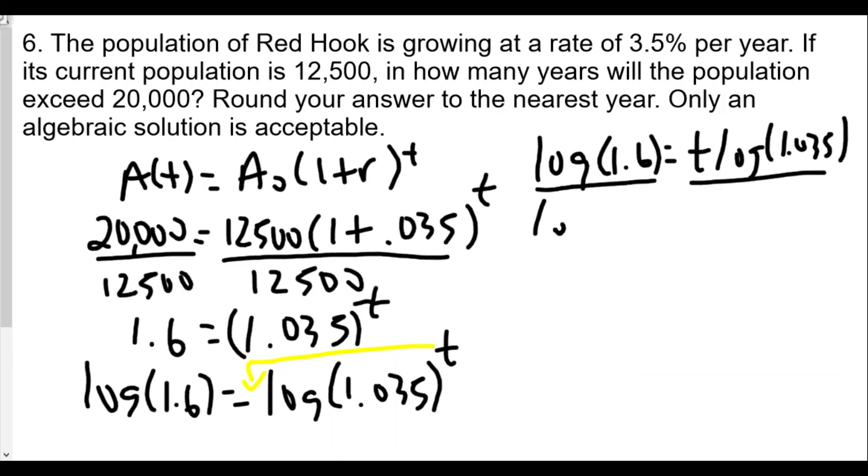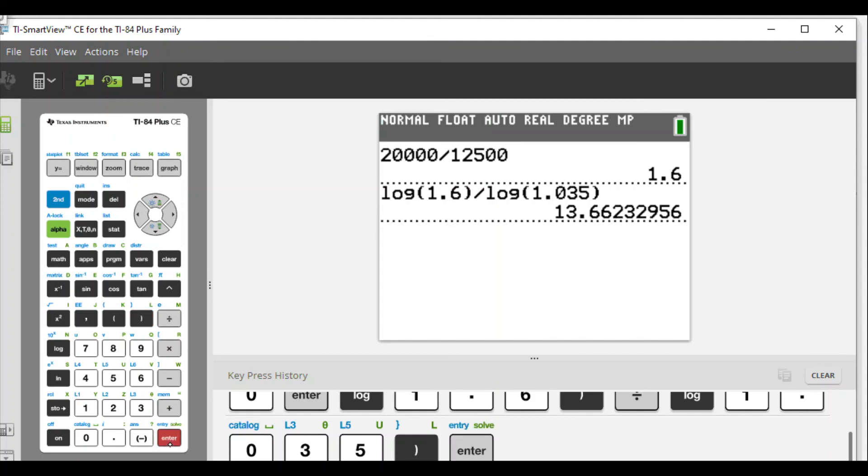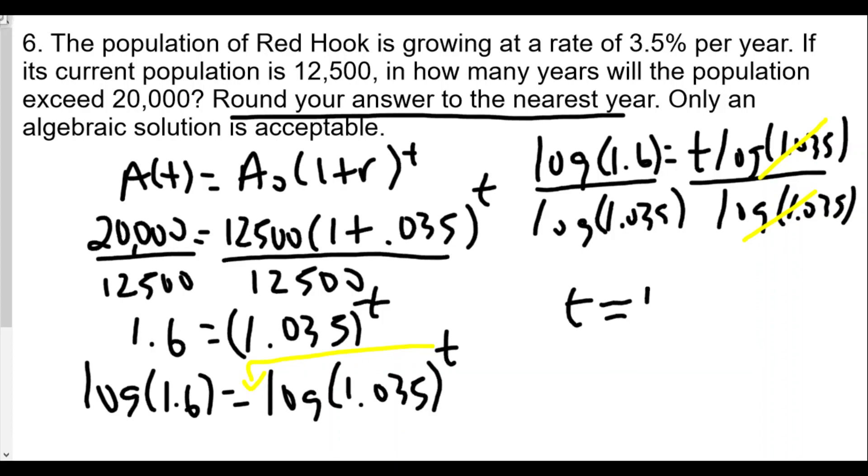We'll divide both sides by log of 1.035. And so now we get, in this case, because log of 1.035 is the actual number, we'll get t by itself. And again, we're looking for rounding our answer to the nearest year. So we'll take log of 1.6 divided by log of 1.035. So log of 1.6, close parenthesis, divided by log of 1.035, close parenthesis. And we get 13.66, which we'll round off to 14. 13.66 will round off to 14 years. And that's how long it's going to take for a population to grow from 12,500 to 20,000.